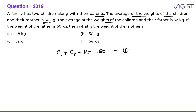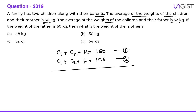The average weight of the two children and their father is 52 kg. So the sum of the weights of the two children plus father is 52 into 3, that is 156 kg. If we find the difference — equation 2 minus equation 1 — this gives: father minus mother equals 6 kg. It means the weight of the father is 6 kg more than the weight of the mother.